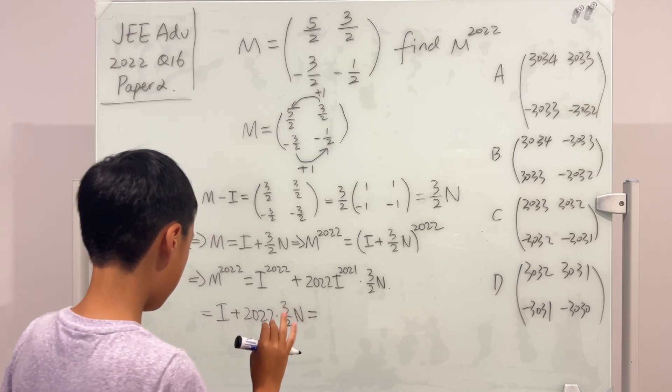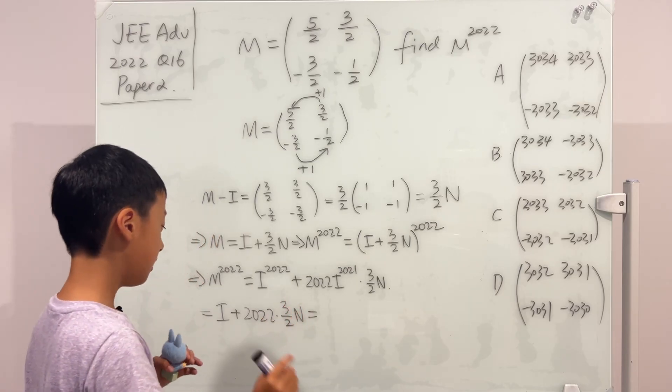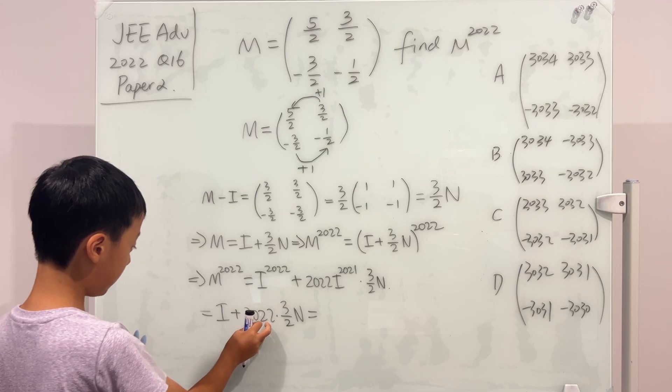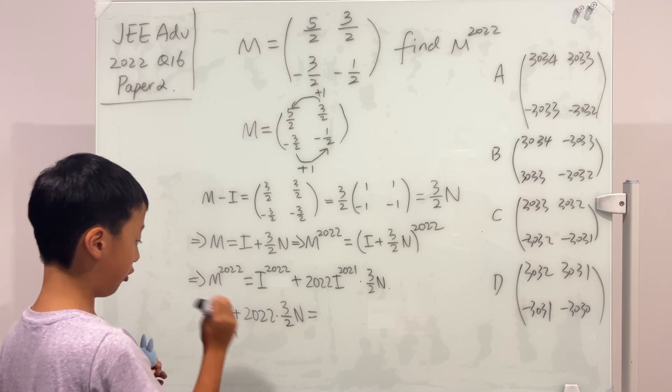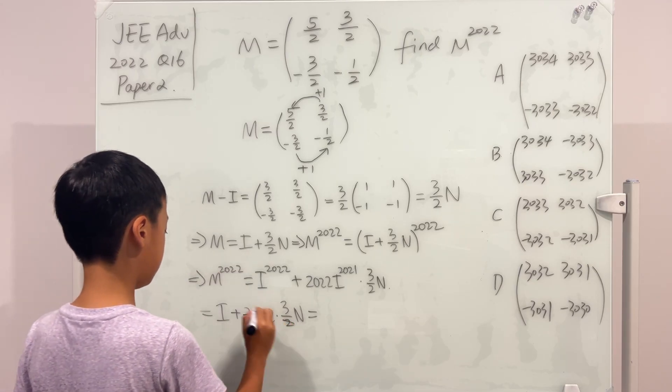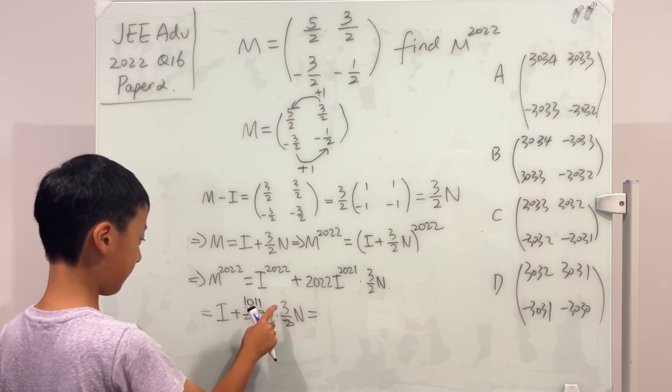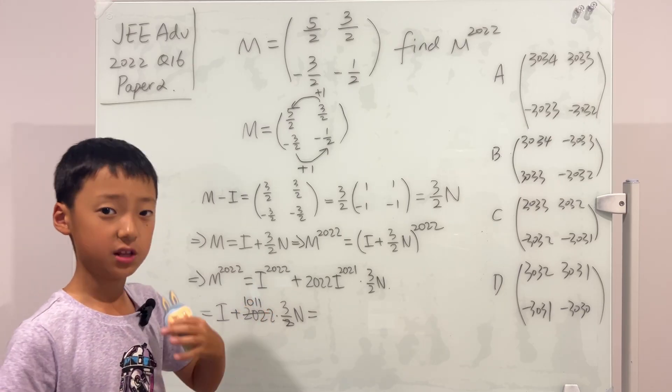And this is equal to, if we change the N back, and we see that 2022 multiplied by 3 over 2 is, this and this cancel. And 1011 multiplied by 3 is 3033.